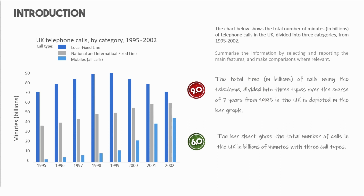The first example gets 6.0 because it uses basic vocabulary and lacks important details like the year. The second one uses an advanced level of words and indicates the important details, so it marks 9.0.